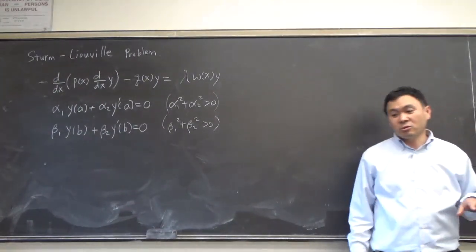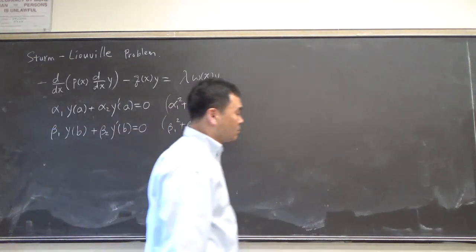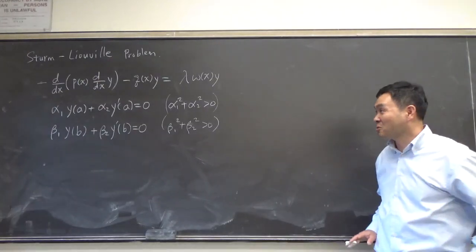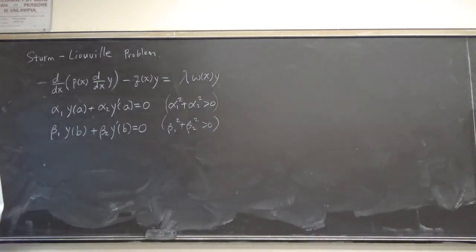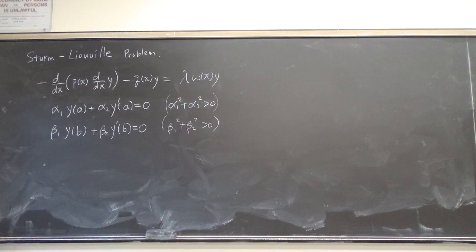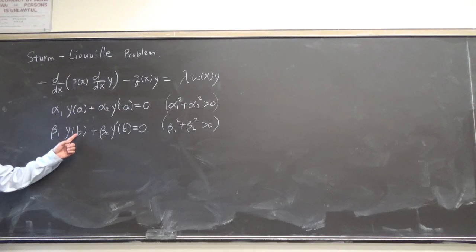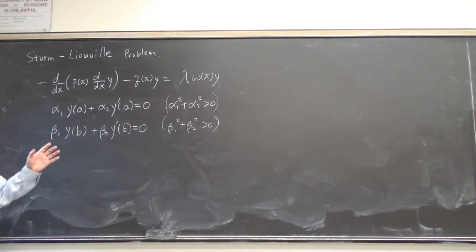When you solve a heat equation or a wave equation or some other PDEs — and we haven't even got to any PDEs yet, though I did the wave equation — along the way we will end up having to solve one of these Sturm-Liouville problems. It looks very complicated. There are points A and B on the x-axis, so this is really an endpoint value problem.